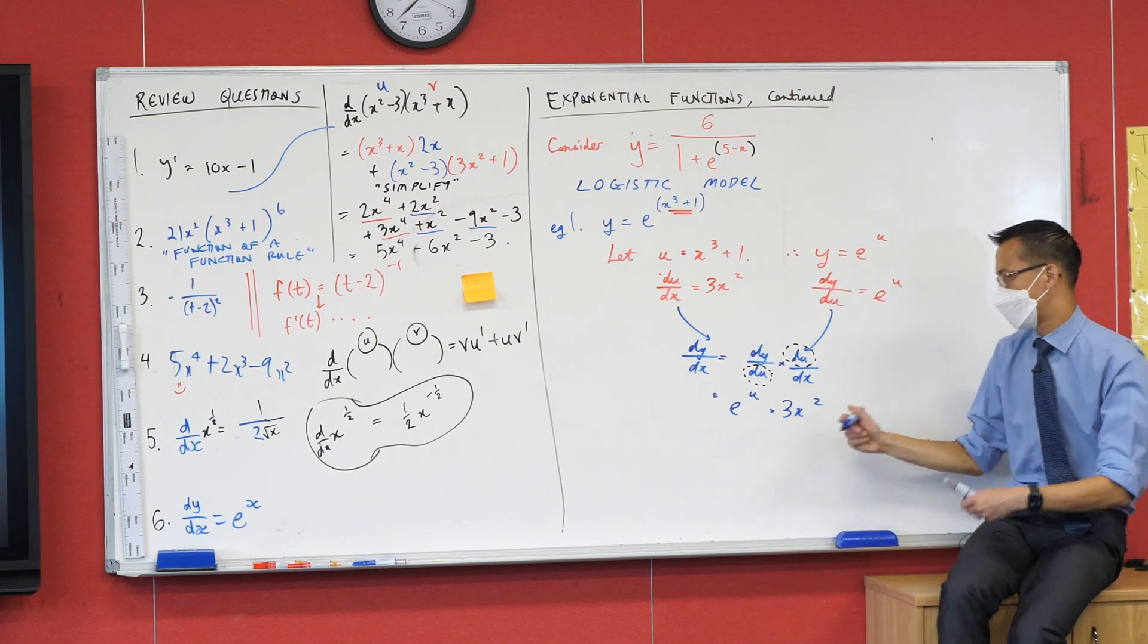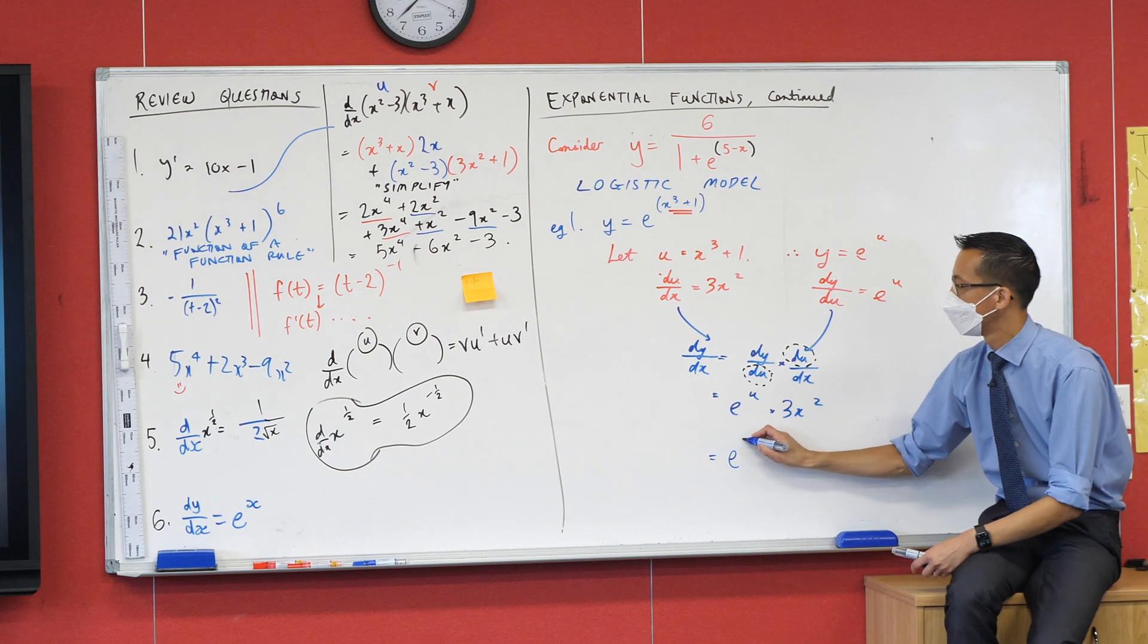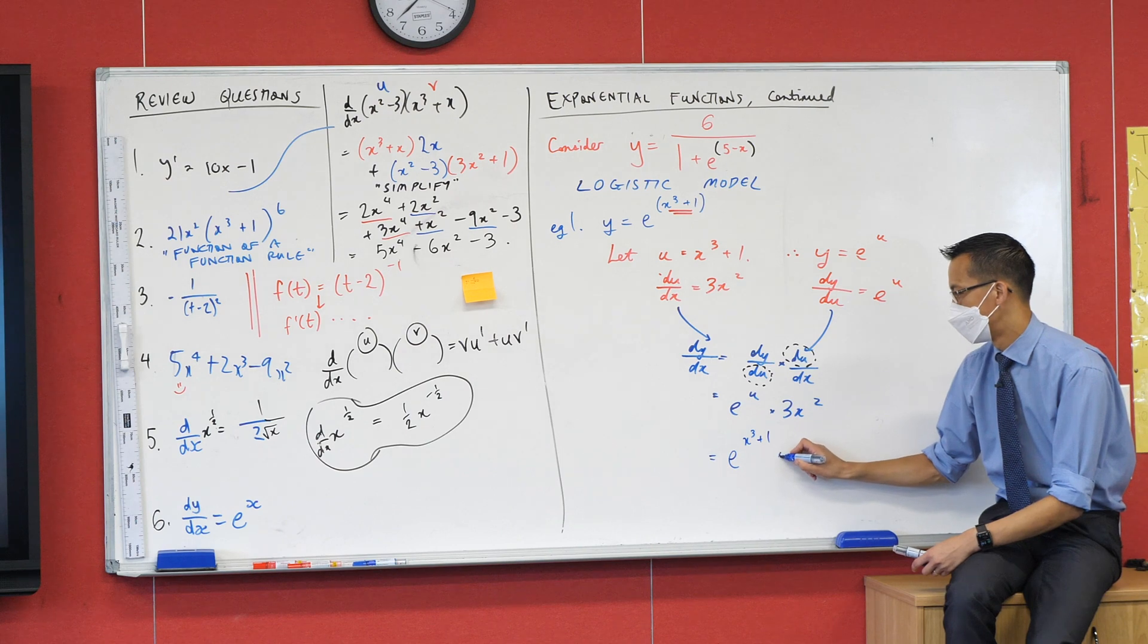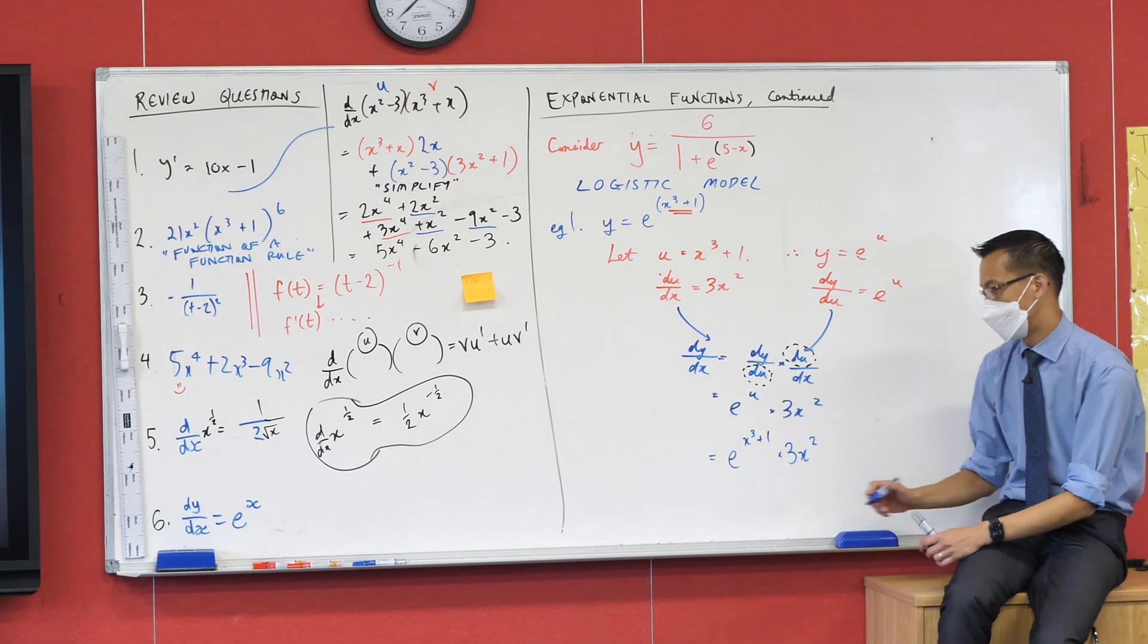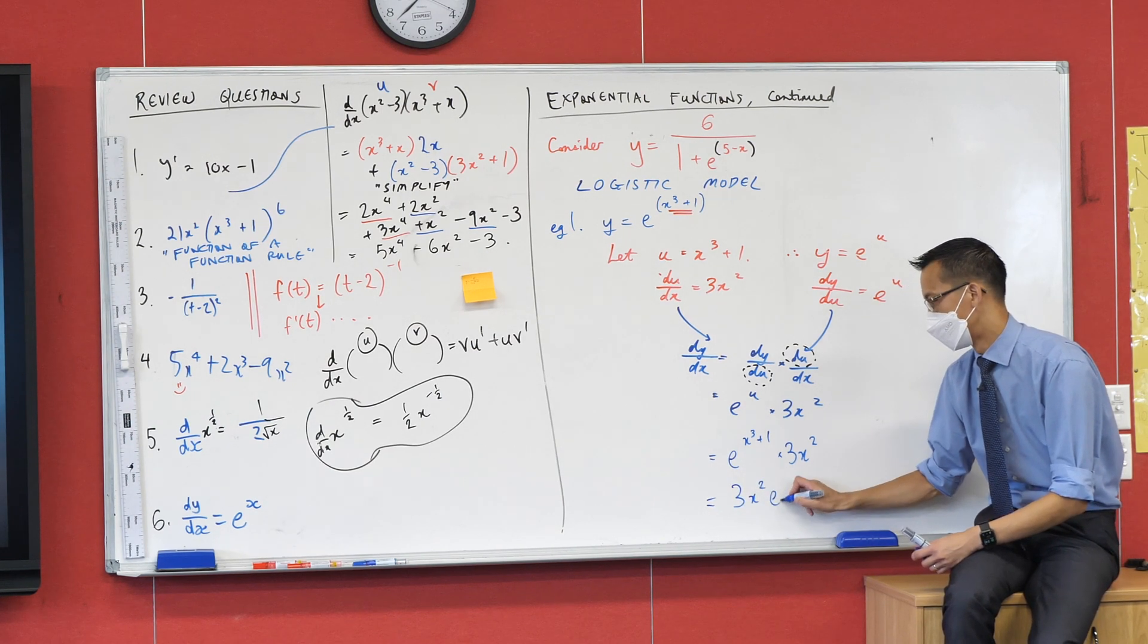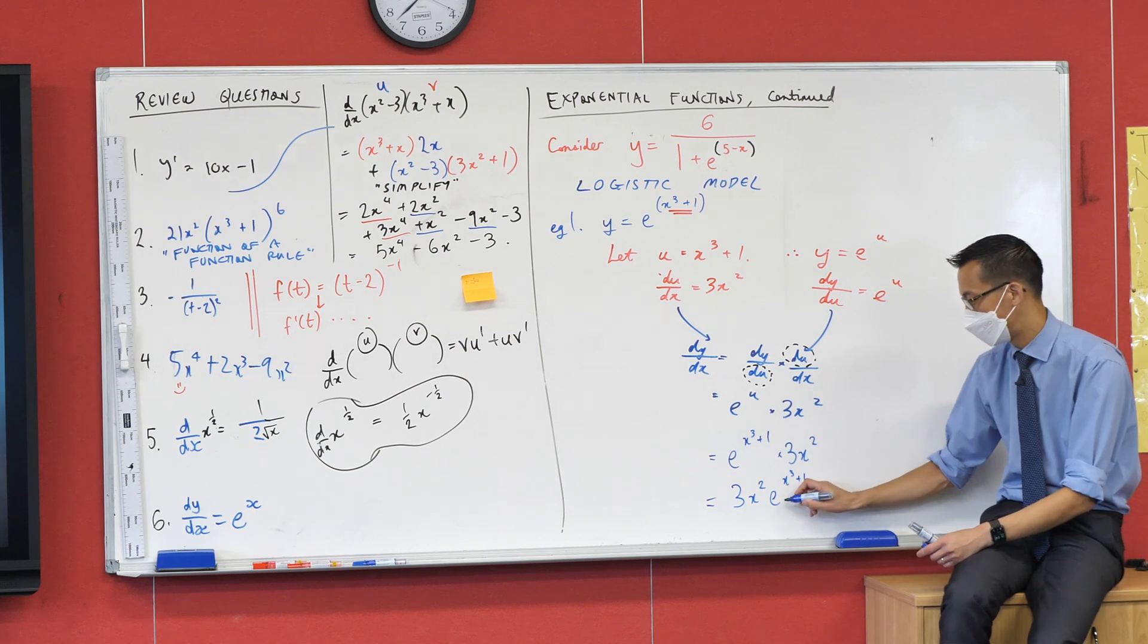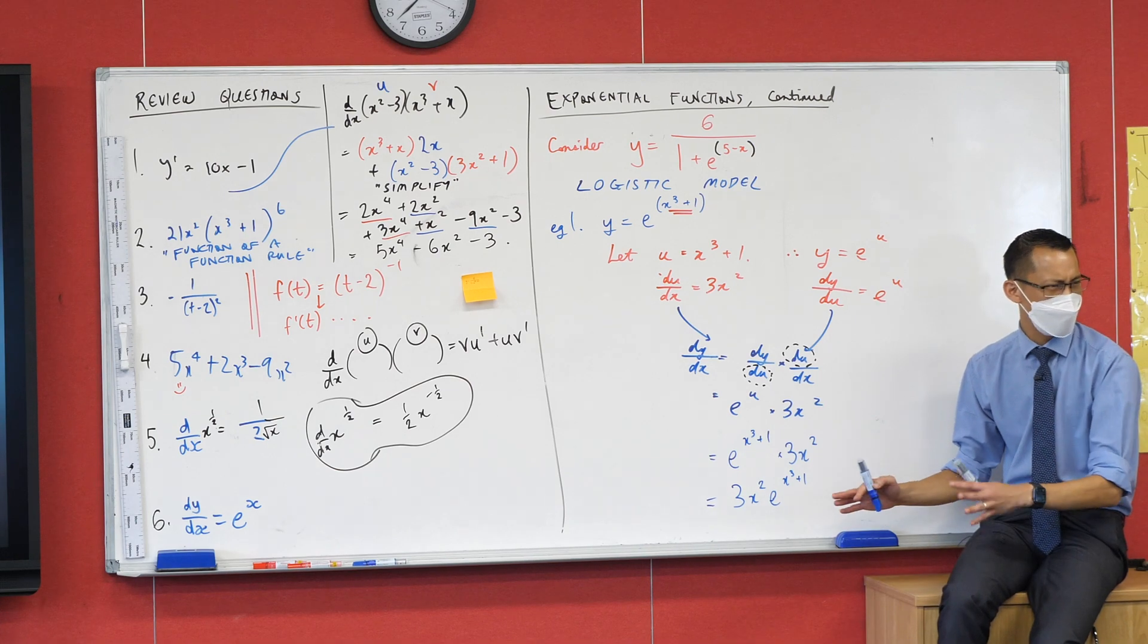So let's write that like so: e to the power of x cubed plus 1, and then I'm multiplying by 3x squared. I mean if you wanted to you could write it the other way around because products, the order doesn't really matter. Some of you might feel like that's a teeny bit simpler but they really are the same thing. That makes sense? You content with that?